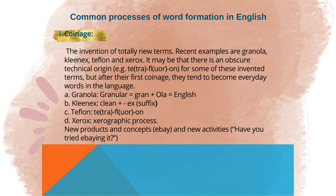Kleenex means clean plus -x, where x is a suffix. Teflon comes from tetra plus fluor plus -on. Xerox comes from the xerographic process.